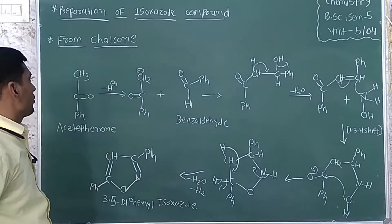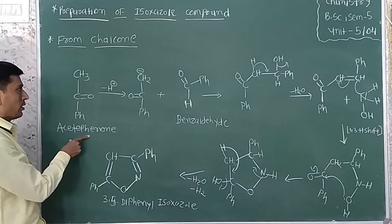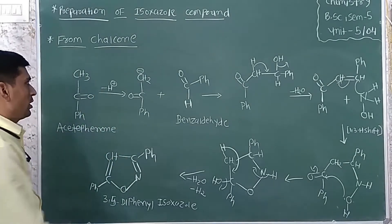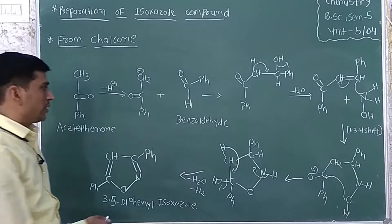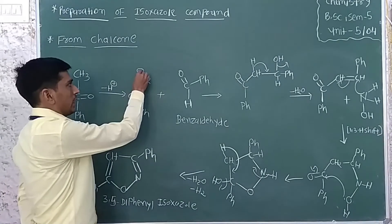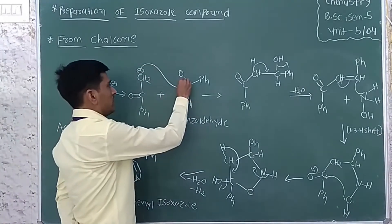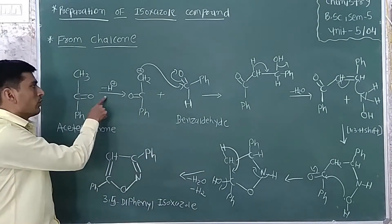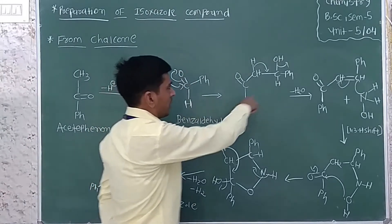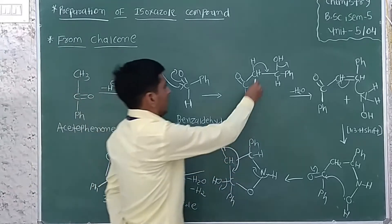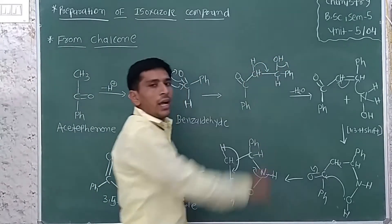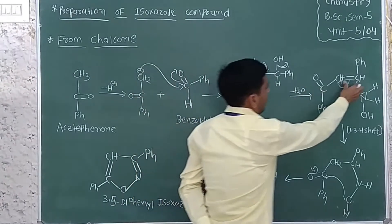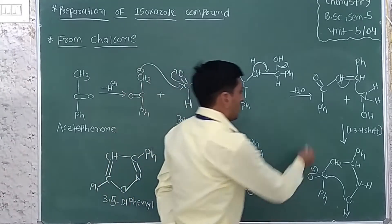Preparation of isoxazole from chalcone: first, acetophenone undergoes deprotonation and converts to CH2⁻, which then reacts with benzaldehyde via nucleophilic attack on the carbonyl carbon. The carbon-oxygen double bond opens, forming O⁻, which is protonated to give an OH group. Then removal of H2O forms a carbon-carbon double bond.